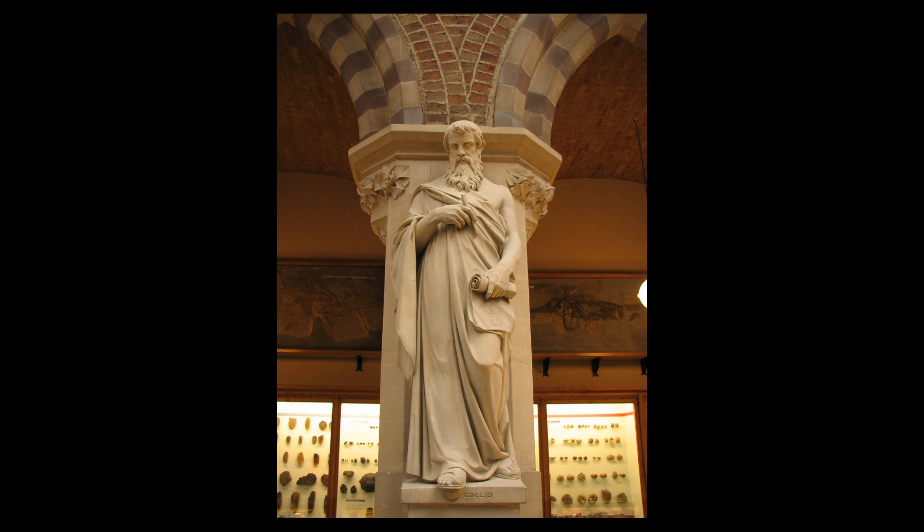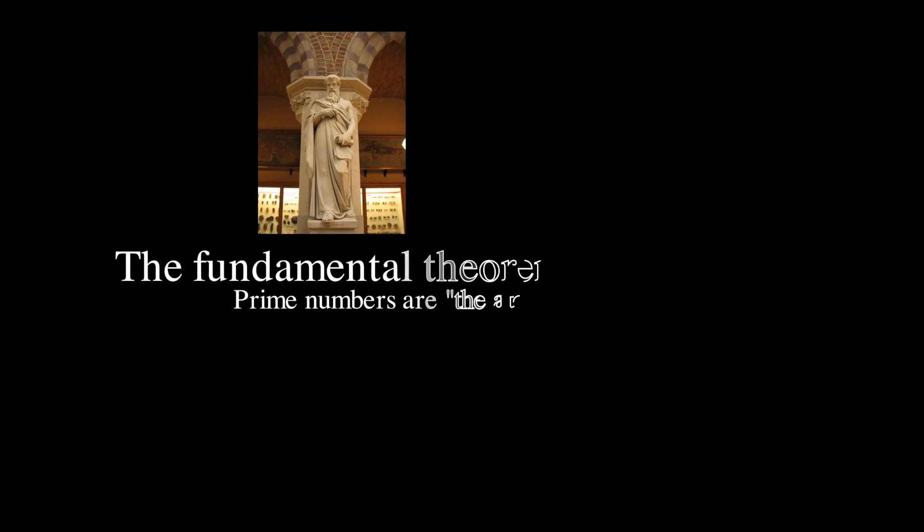In the times of ancient Greece, mathematician Euclid discovered the atoms of numbers. What we today call the fundamental theorem of arithmetic sets out how all the integers are built out of the prime numbers. Today we're going to find out how that works.